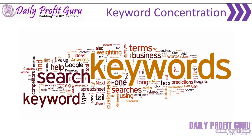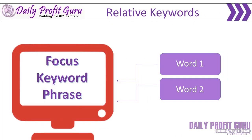By focusing on a specific focus keyword phrase, your content will have enough weight to get ranked well relatively quickly. You also want to consider using relative words that have a relationship with your focus keyword phrase. If you have your main keyword phrase or focus keyword phrase, you can take that focus keyword phrase and add a term on the end of it that makes sense but is related to your focus keyword phrase.